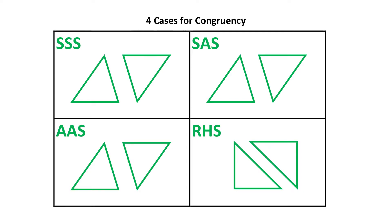Let's quickly recap the four cases for congruency. These cases can be used to prove that two triangles are congruent. The first case is side, side, side. If you have three pairs of sides equal in two triangles, it means those two triangles will be congruent — all pairs of sides will be equal and all pairs of angles will be equal.